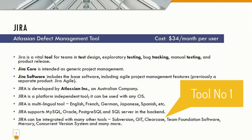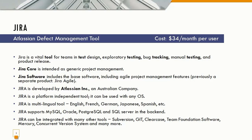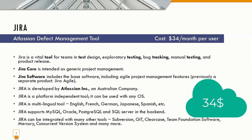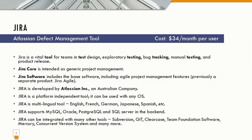The first evergreen tool, used for defect management, project management, test case management, scrum planning, and sprint planning, is JIRA, which is built by the Atlassian team. The cost of this tool is around $34 per month per user. JIRA is a vital tool for teams in test design, exploratory testing, bug tracking, manual testing, and product releases. It is also used for scrum planning.